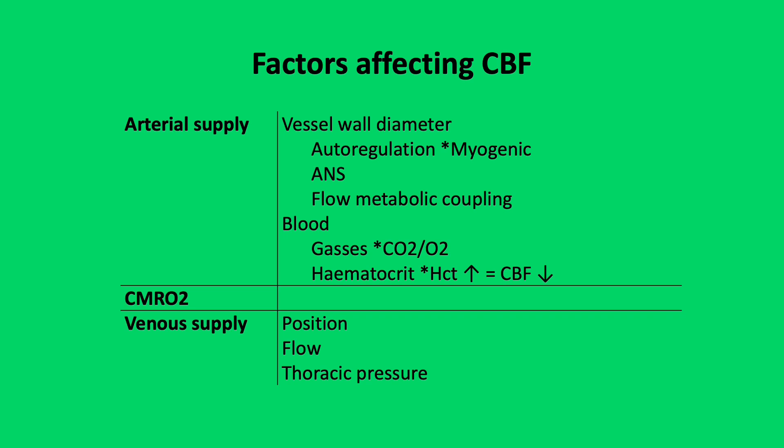Autonomic nervous system: the cerebral vasculature receives its post-ganglionic sympathetic nervous supply from the superior cervical ganglion. Therefore, sympathetic stimulation results in vasoconstriction, and chronic stimulation can result in a shift of the autoregulation curve to the right — i.e. chronic hypertension.